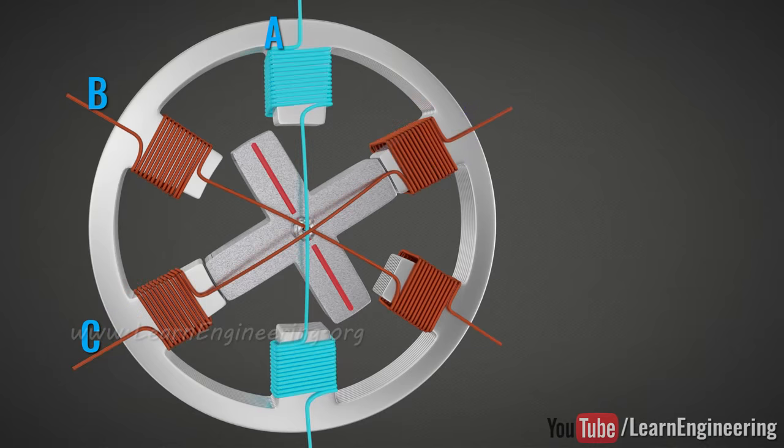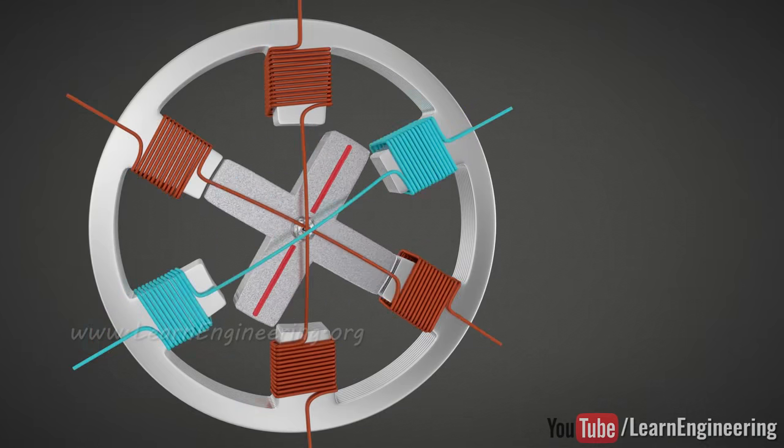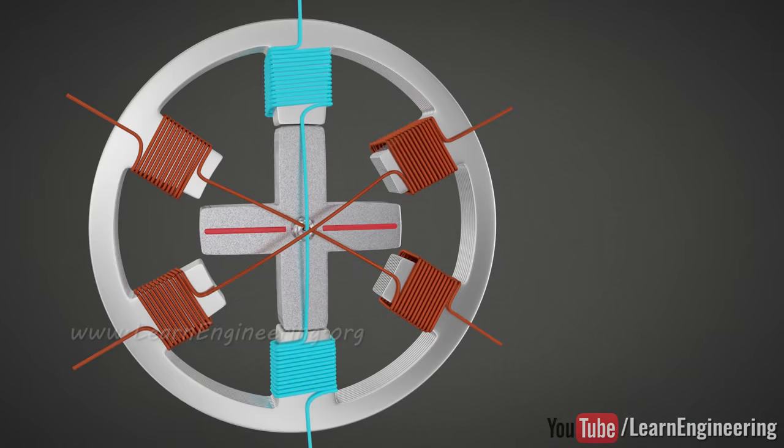After that, coil A becomes energized again. In short, the rotor moves to the position with the least reluctance. The step size of this motor is 30 degrees.